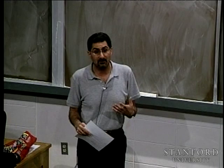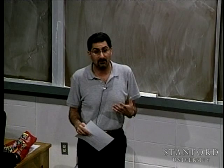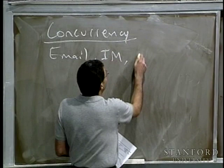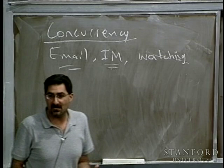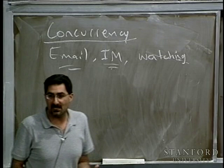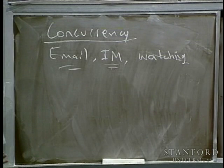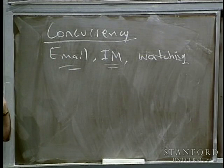Your computer only has one processor, which means at any given time really only one thing is happening. How does it look like multiple things are happening at the same time? That's the notion of concurrency. What's really happening is the operating system gives each process a little piece of time to execute, then does the next one and the next one — email gets a few milliseconds, IM gets a few milliseconds, video gets a few milliseconds — and it cycles through so fast that to you it all looks like it's happening simultaneously.